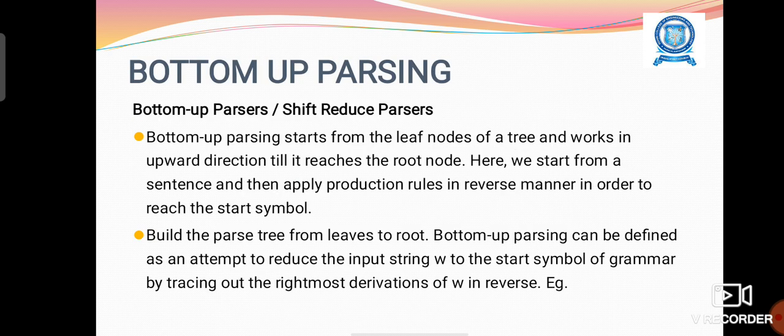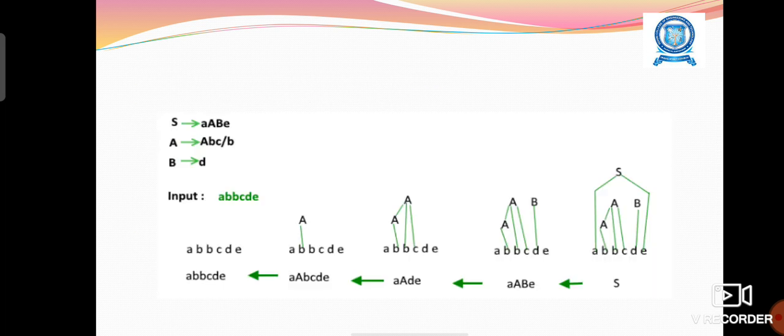And the next type is bottom-up parsing. It is otherwise called shift-reduce parsing. It starts from the left node of the tree and works in upward direction till it reaches the root node. Here we start from a sentence and then apply production rules in reverse manner in order to reach the start symbol.